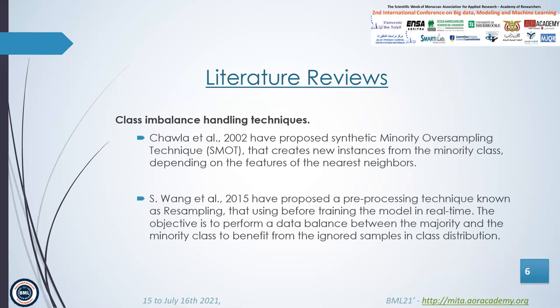Now, let's go to some proposed works for this research gap. I have focused primarily on class imbalance handling techniques. The first study proposed a synthetic minority oversampling technique that creates new instances from the minority class depending on the features of the nearest neighbors. The second study proposed a preprocessing technique known as resampling, used before training the model in real time. The objective is to perform data balance between the majority and minority class to benefit from the ignored samples in class distribution.